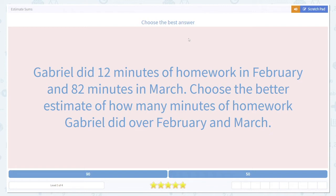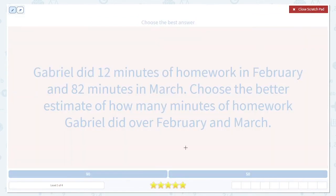Gabriel did 12 minutes of homework in February. That's not very much. And 82 minutes in March. Choose the better estimate of how many minutes of homework Gabriel did over February and March. So let's look at what this question is asking us for.